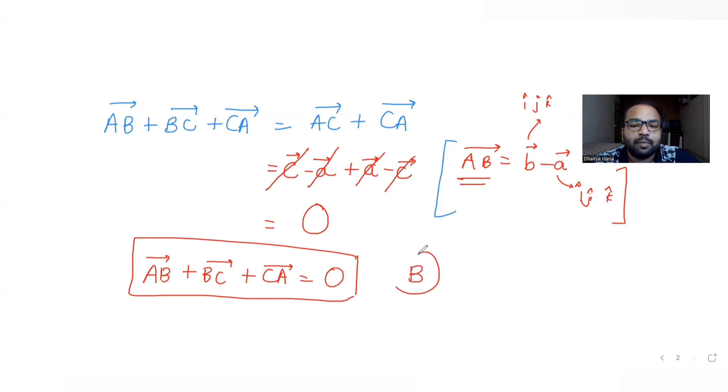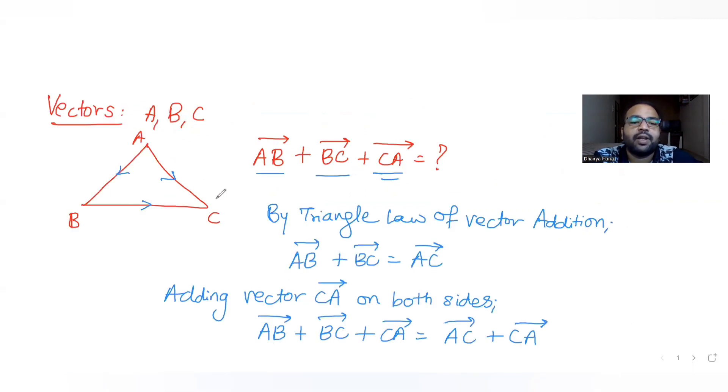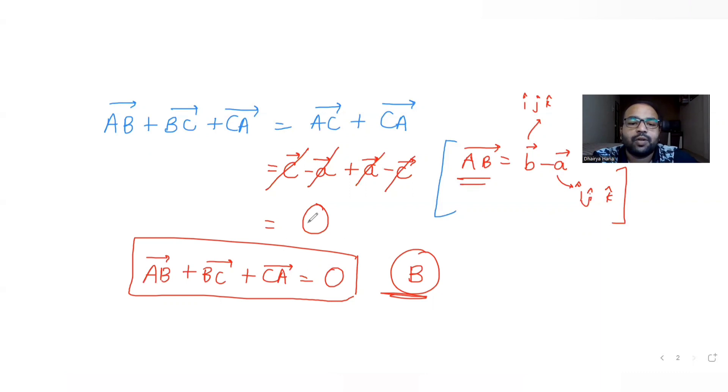So the correct answer for this question is B. I hope you have understood how to solve this type of question where vector addition of three sides of the triangle ABC is asked to us, that is AB bar plus BC bar plus CA bar, and that comes out to become zero in this question, that is your answer option B.